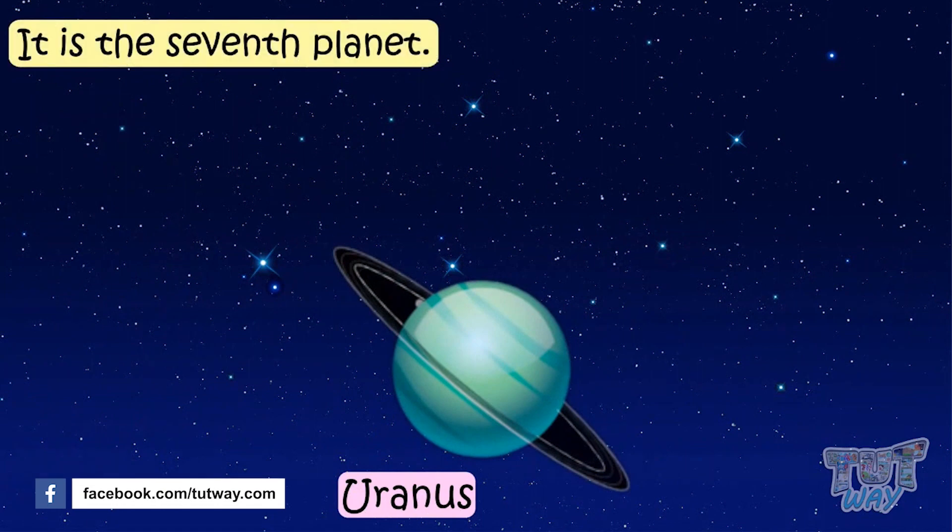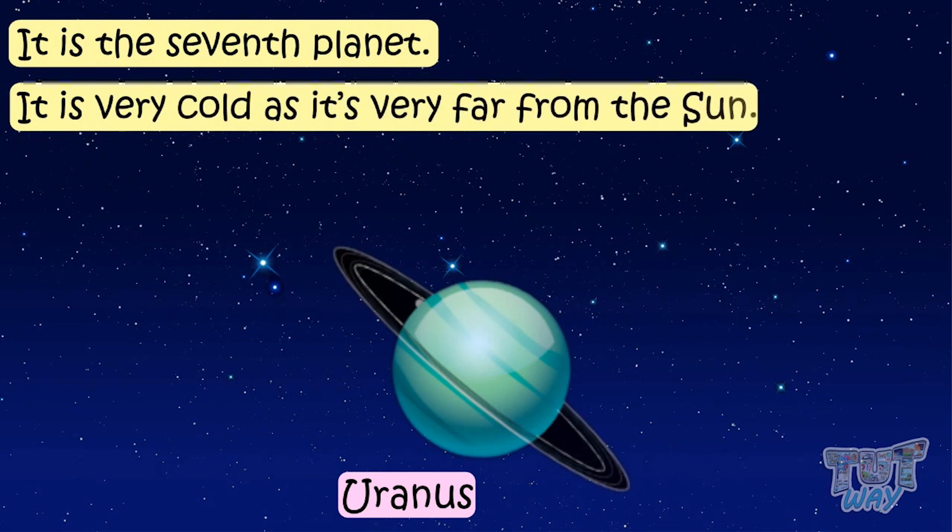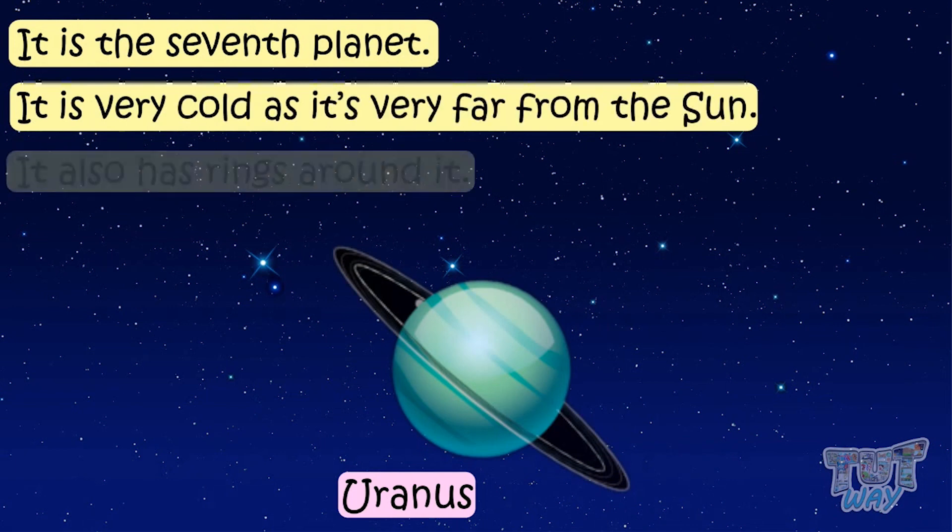Uranus is the seventh planet. It is very cold as it's very far from the sun. It also has rings around it.